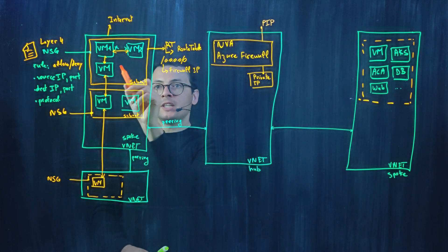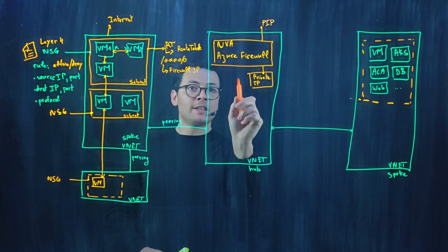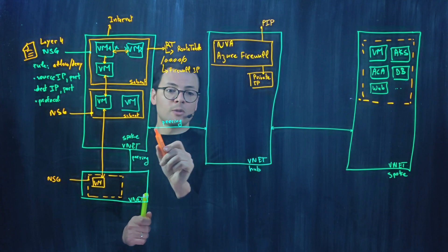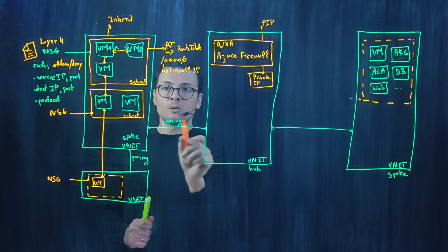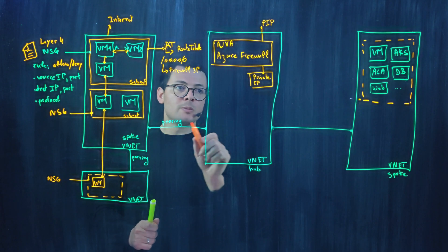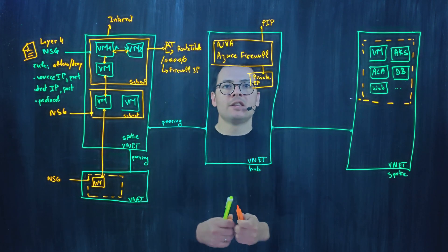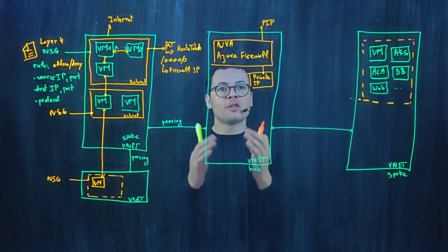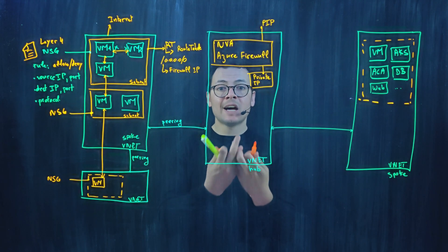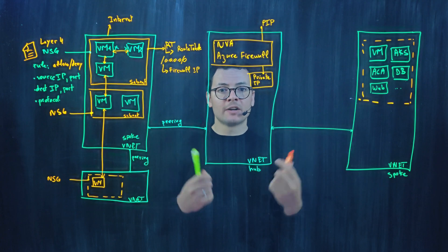And because those two networks are connected through the peering, that network traffic will go through the peering and then to the Azure firewall. Here, inside the Azure firewall, we can control that traffic to allow it or deny it to access some other resources.